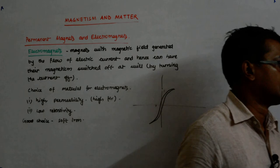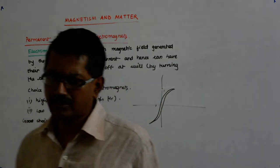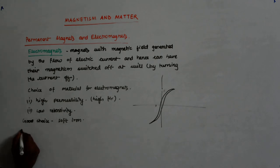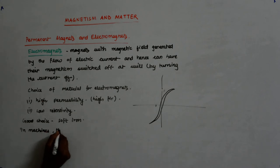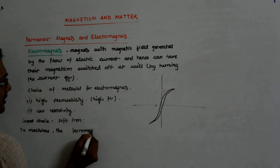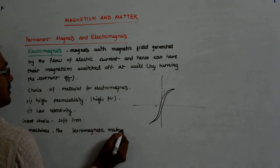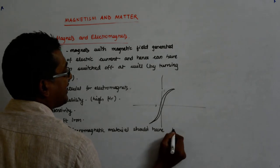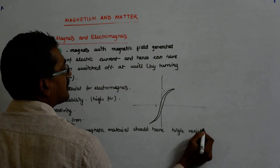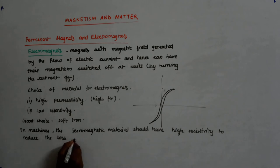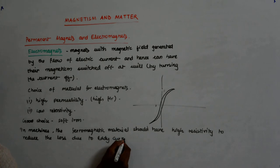And we know that the material that is used in our machines and motors and generators they should have a very thin hysteresis loop that we have already discussed. There's one more thing to it, we will soon understand a concept called eddy current. So in machines, the ferromagnetic material should have high resistivity to reduce the loss due to eddy currents.